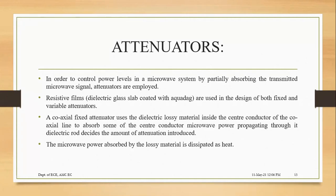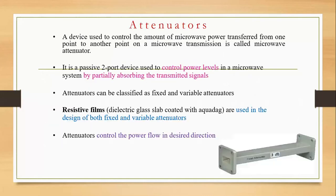The microwave power absorbed by this lossy material is dissipated as heat in case of your coaxial fixed attenuator. This is a fixed attenuator — you have it in the lab too. There will be different dB level markings. The one in the figure is around a 3 dB attenuator. As I said, it is a device which controls power — so you call it a microwave attenuator.